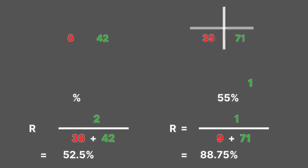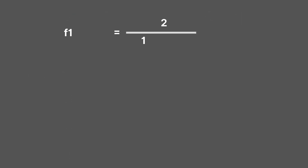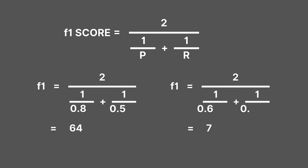This leads to what's called an F1 score. The F1 score is essentially an average of your precision and recall. Model B is better than Model A going by the F1 scores — the higher your F1 score, the better the model performed.